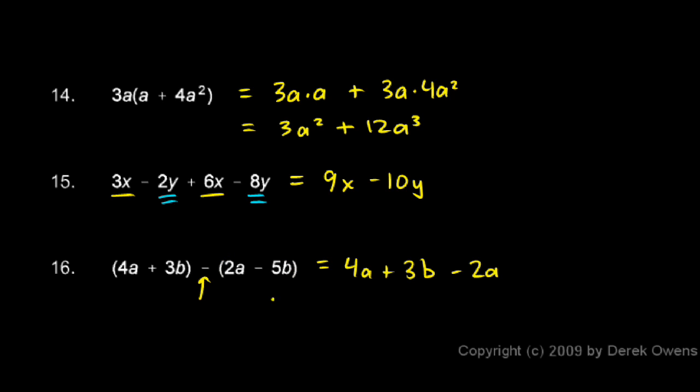When we subtract negative 5b, that's the same as adding 5b. So we've basically taken this problem and rewritten it, but we've dropped the parentheses. And in doing so, we've distributed this negative sign.